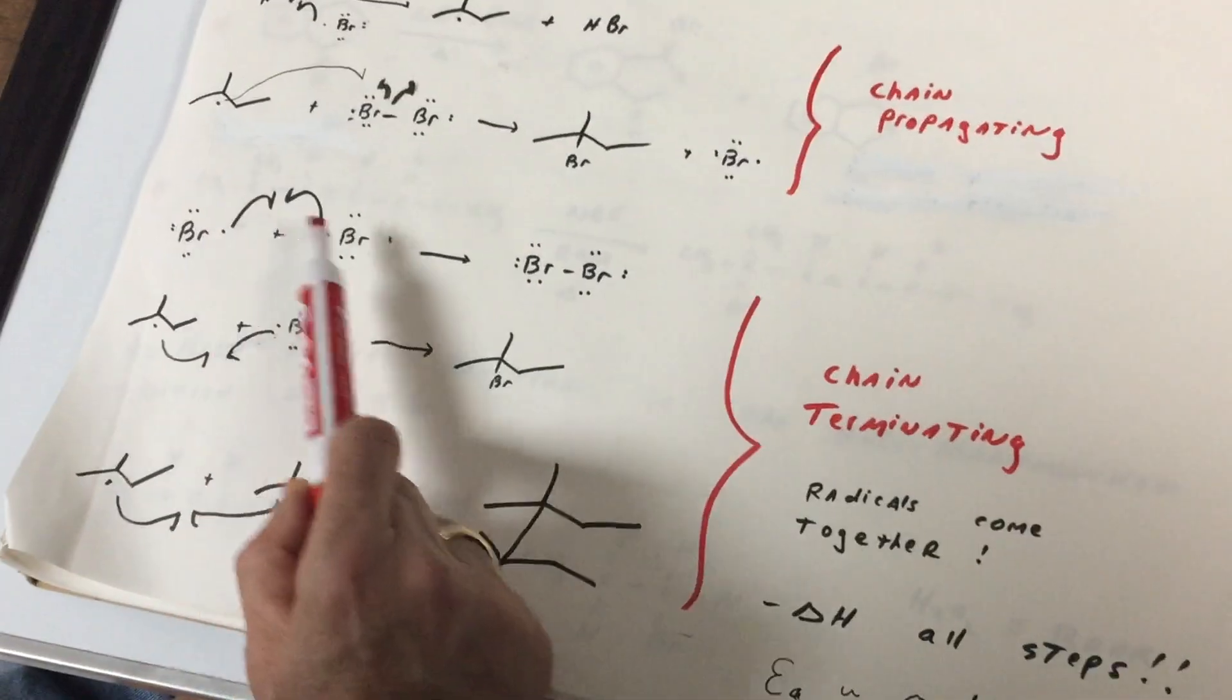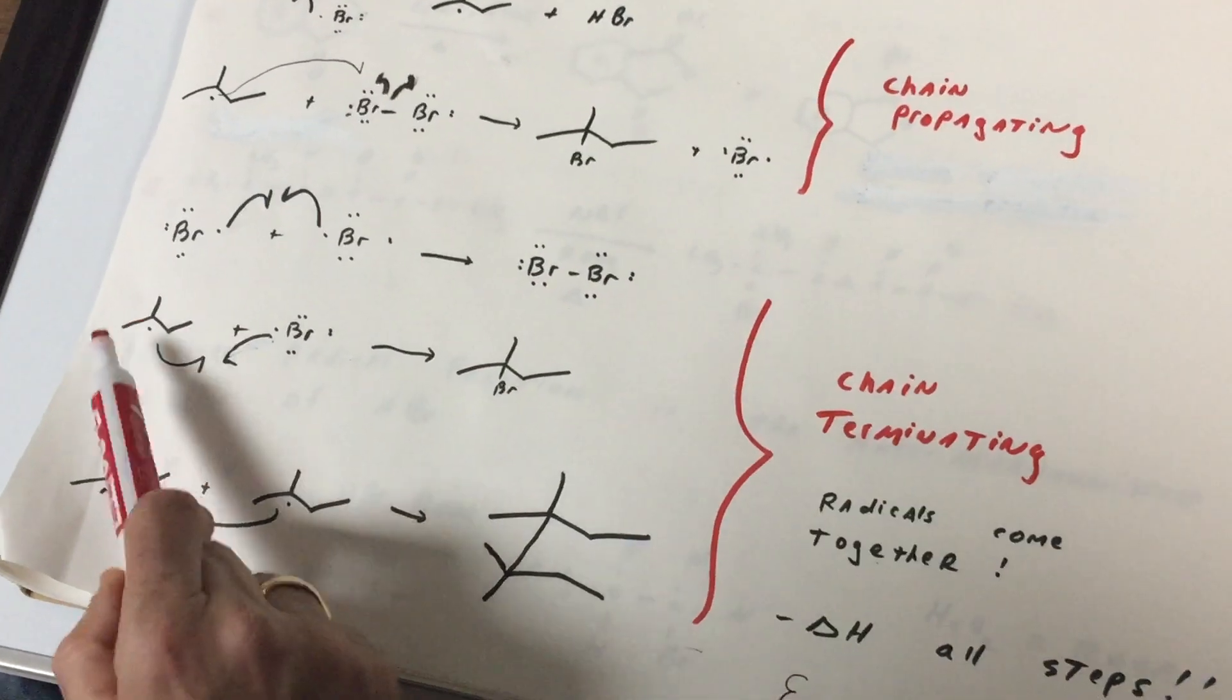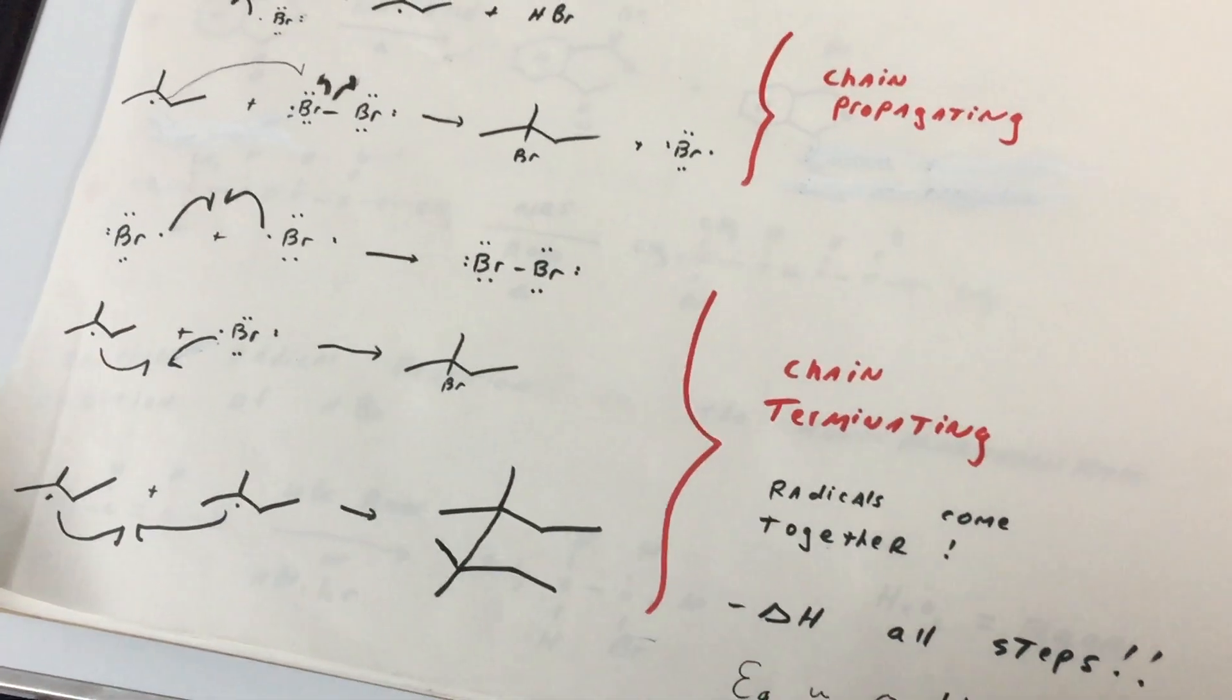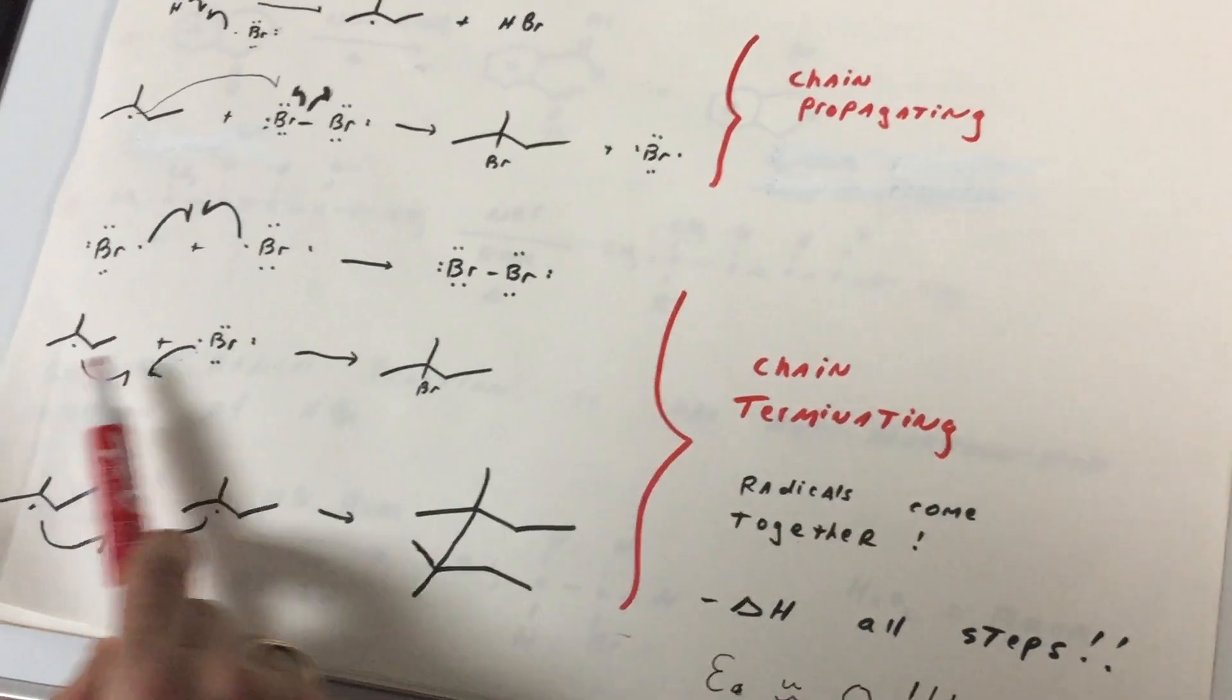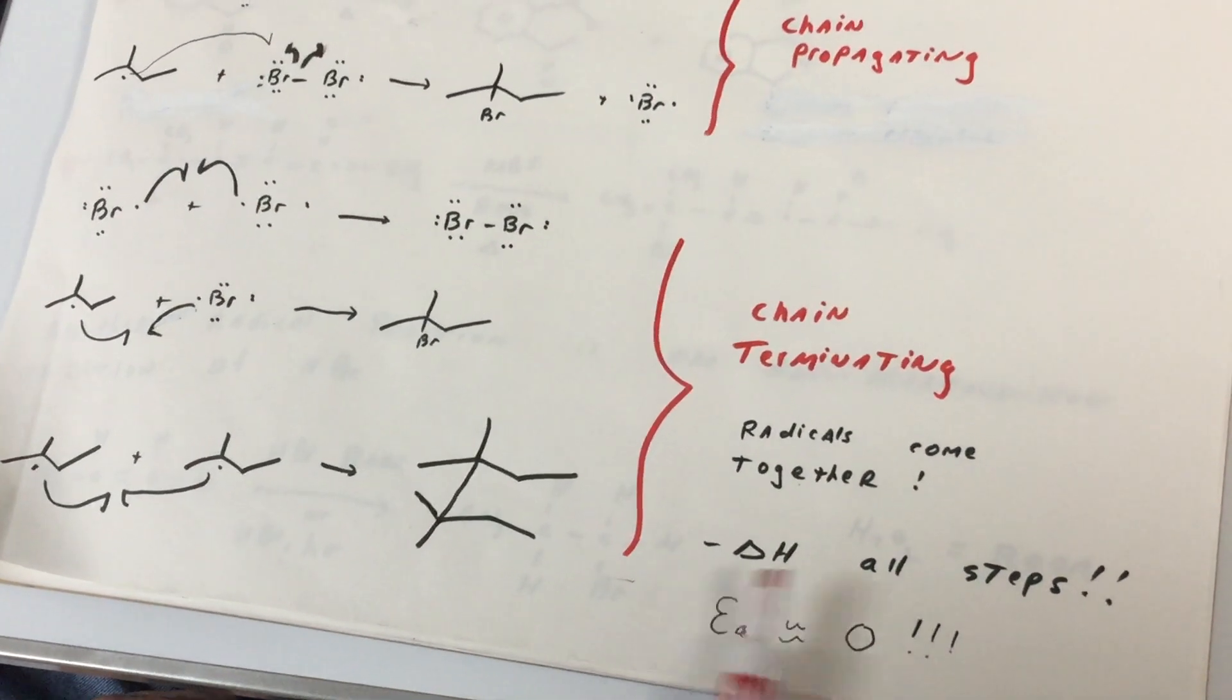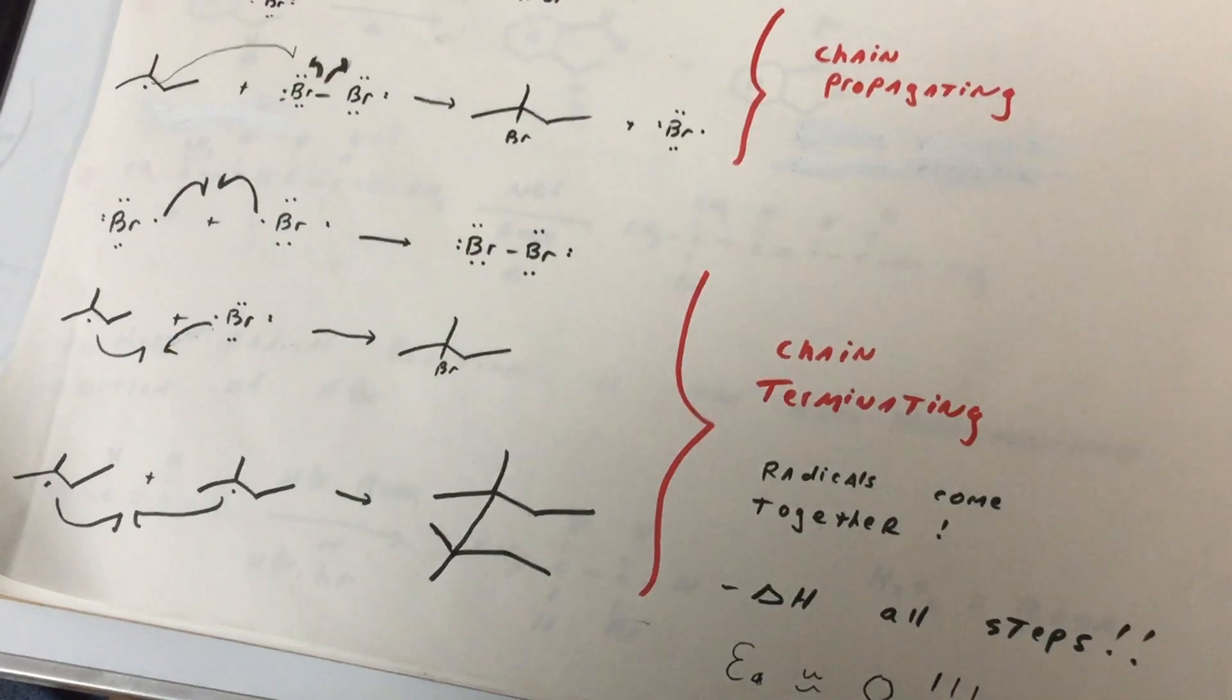Any time radicals bump into each other. Here you have two bromine radicals hitting each other. Here you have an alkyl radical with a bromine and two alkyls. Any one of those combinations results in what we call the terminating steps. So when radicals come together, that is a terminating step. So make sure you can recognize these steps. And don't forget, the terminating steps are all exothermic and the energy of activation of the terminating steps would be approximately zero.